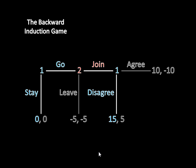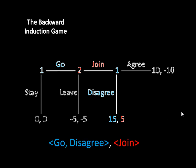Player two would want to join because she knows that player one would disagree. So that is the outcome of this game: player one goes, player two joins, and player one disagrees. And we can write the equilibrium just like this — player one goes and disagrees, and player two joins.